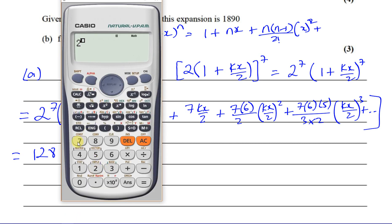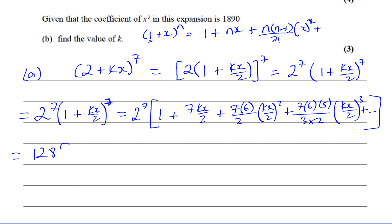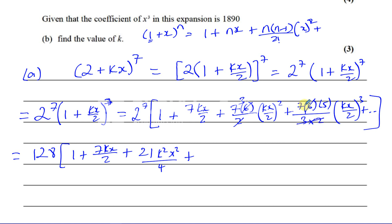Inside the bracket we have: 1 + 7kx/2, plus 21 times k²x²/4 (since the 2 and 6 cancel to give 3, so 7×6/2 = 21, and (kx/2)² = k²x²/4), plus 35 times k³x³/8 (since the 6 and 3×2 cancel to give 35 from 7×6×5/6).